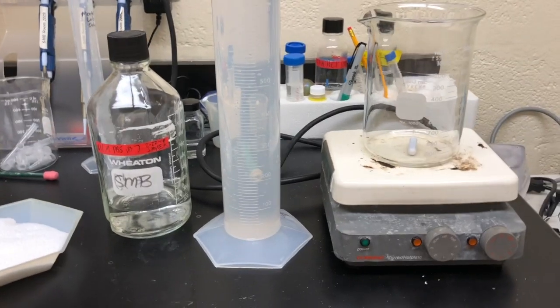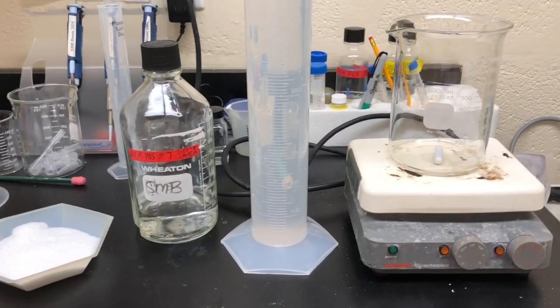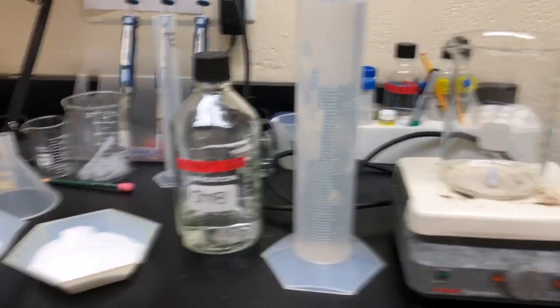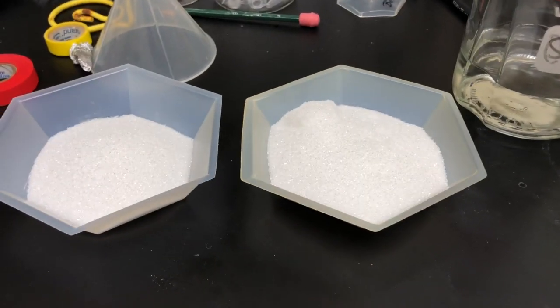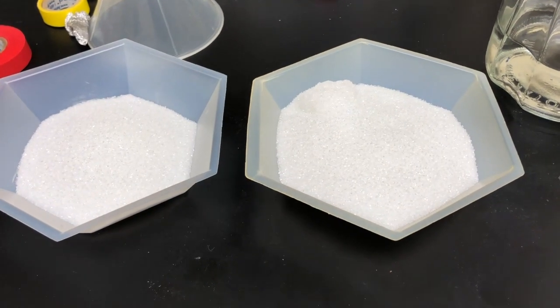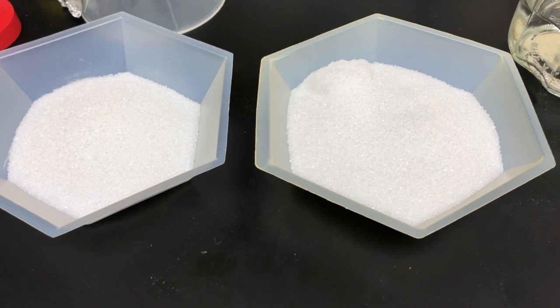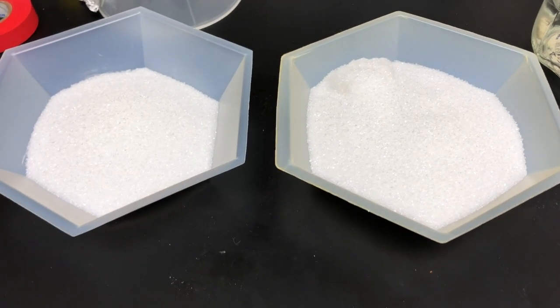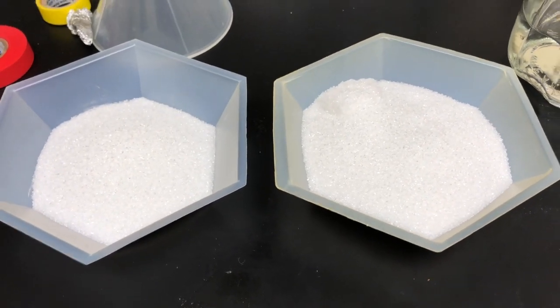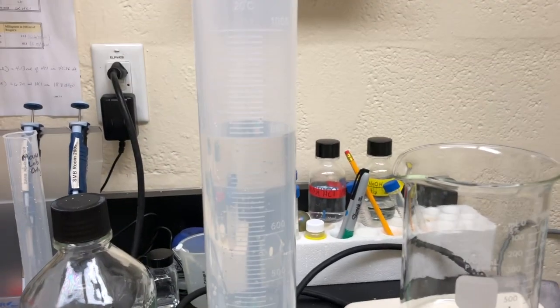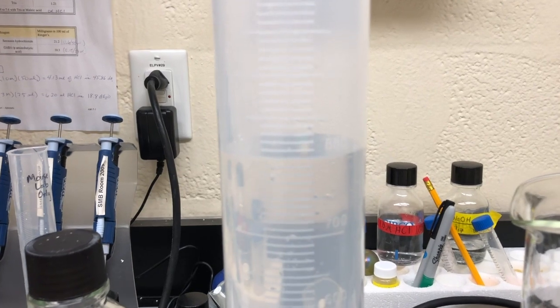Hello everyone, today I'm going to show you how to make 30% sucrose in 0.1 molar PBS. First, you want to weigh out 300 grams of sucrose in two containers. Weigh both because the scale only goes up to 200 grams, so you want to do another one with 100 grams. Then you want to measure out 800 ml of 0.1 molar PBS at eye level in a graduated cylinder.